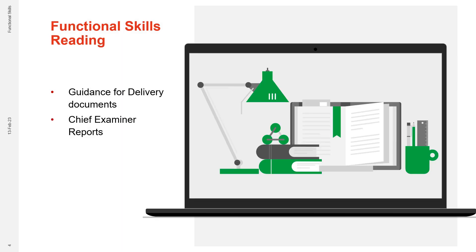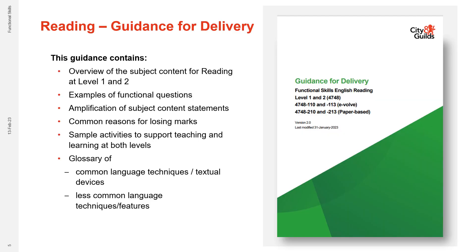Starting with functional skills English reading. The new Chief Examiner reports and the guidance for delivery documents will be available from the 4748 qualification page shortly. They're in the process of being formatted with our smart new green livery, but let's preview the content. The latest functional skills reading guidance for delivery document contains an overview of the subject content for reading at levels one and two, together with examples of functional questions that may be used to test the subject content statements.